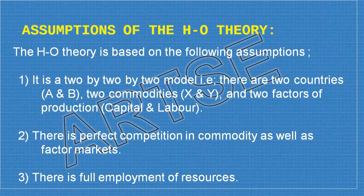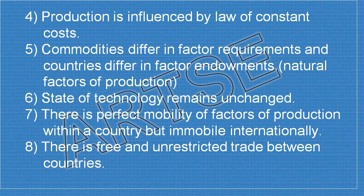The HO theory is based on the following assumptions. First, it is a two-by-two-by-two model: two countries A and B, two commodities X and Y, and two factors of production, capital and labor. Second, there is perfect competition in commodity as well as factor markets. Third, there is full employment of resources. Fourth, production is influenced by the law of constant cost. Fifth, commodities differ in factor requirements and countries differ in factor endowments. Sixth, the state of technology remains unchanged.